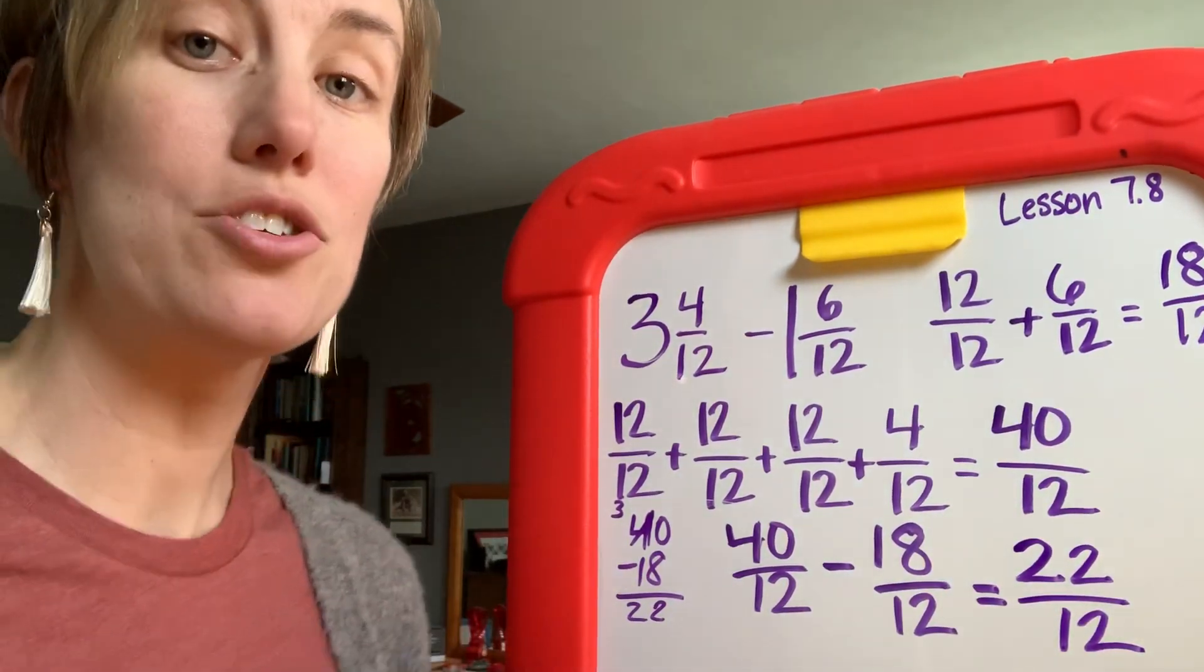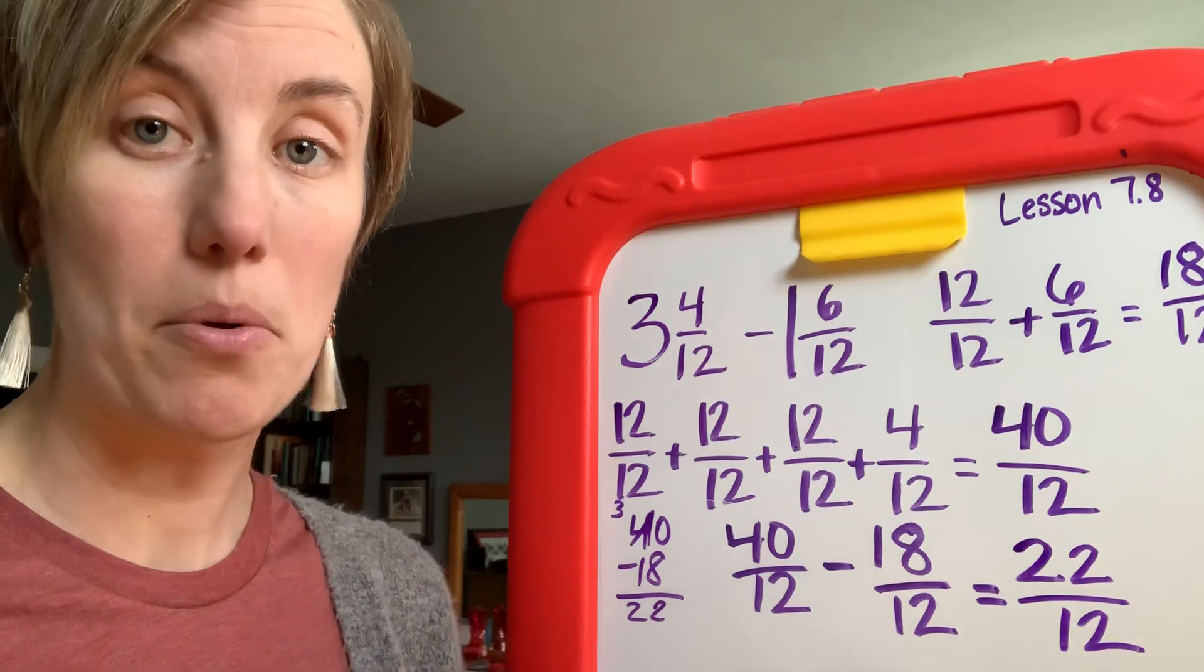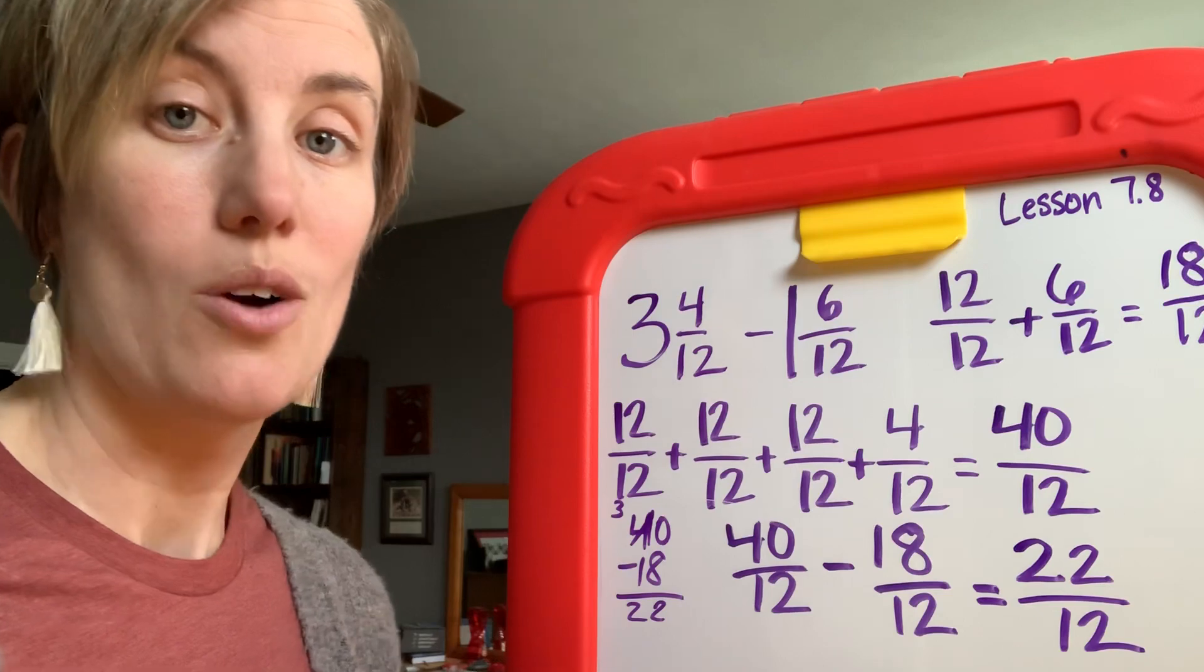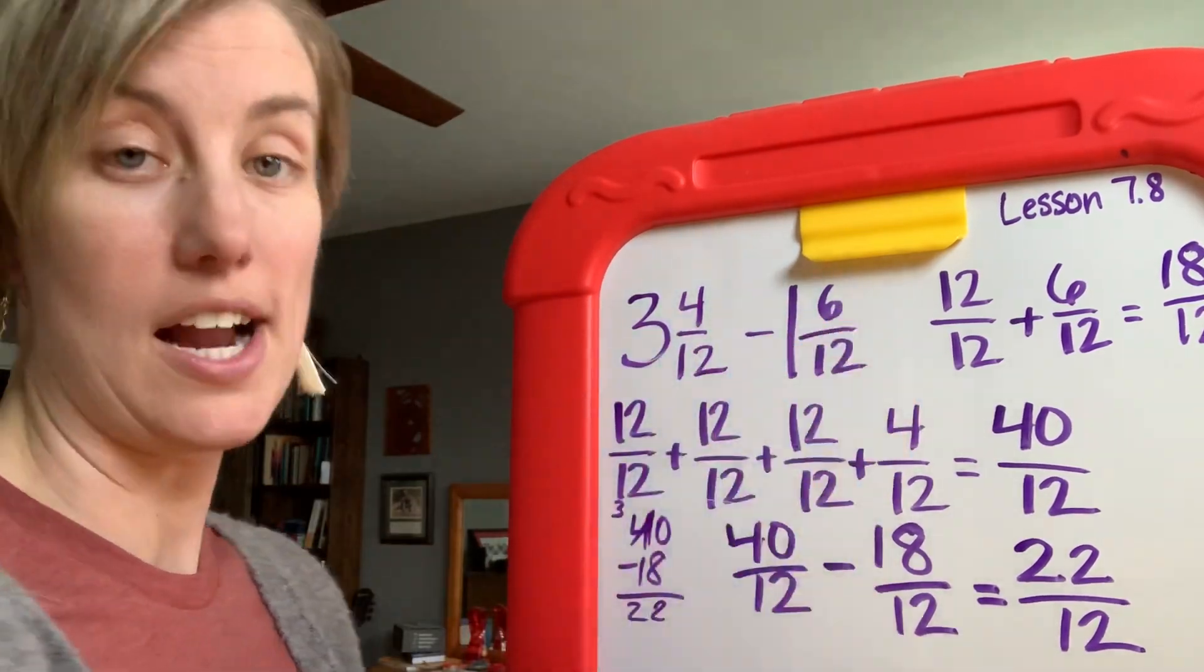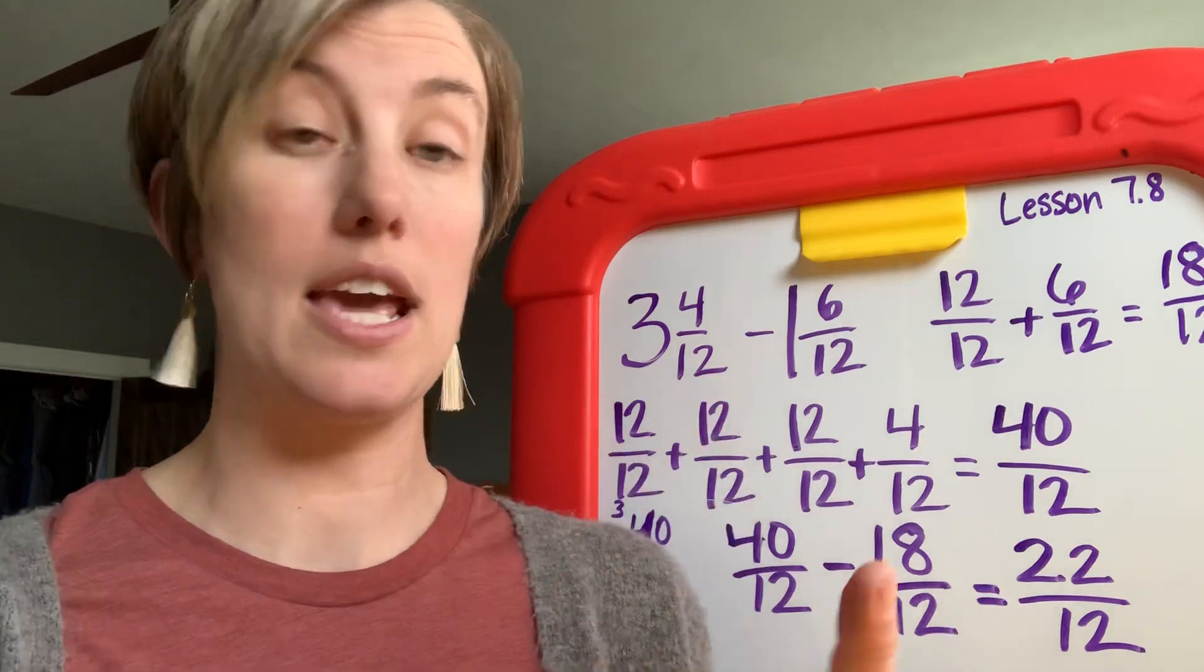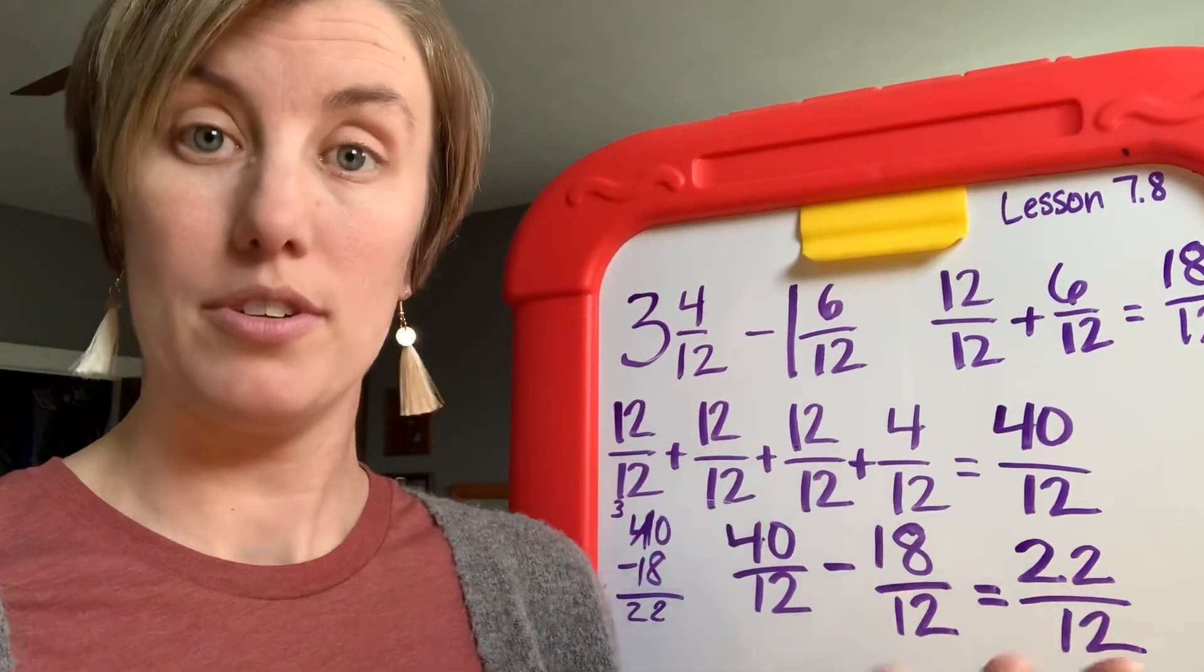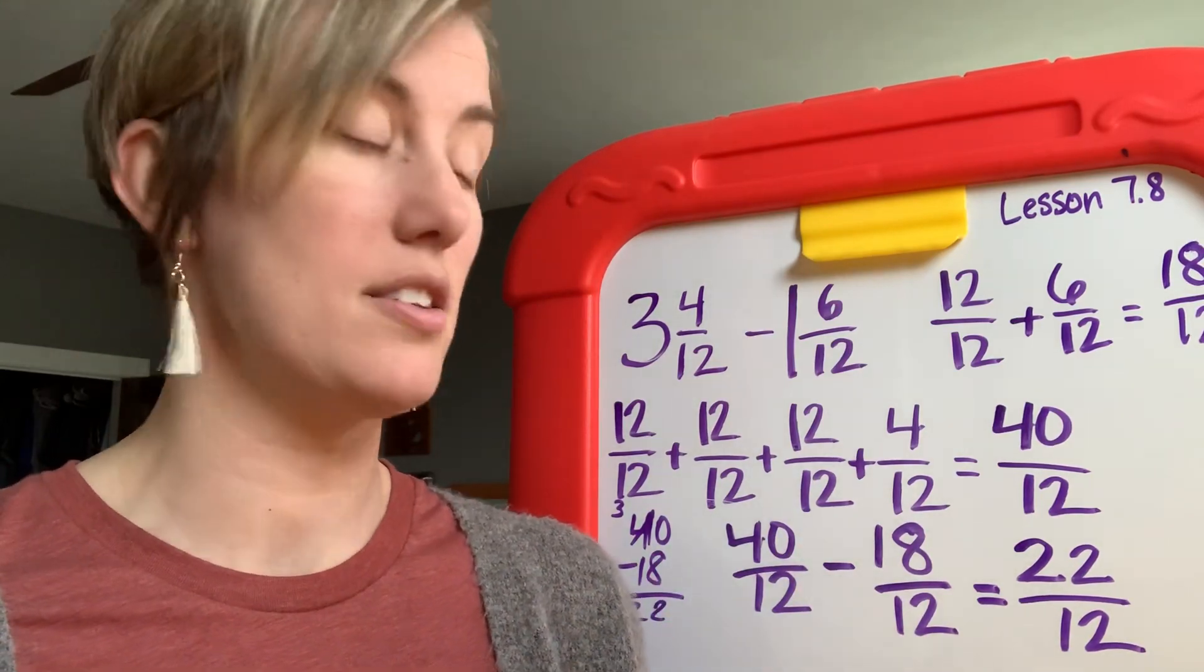These are the three strategies that the GoMath workbook lesson 7.8 gives you in order to subtract mixed numbers where it's really not possible, where you have a fraction that you can't subtract and you have to rename. These are the three strategies you can choose from: you can draw a model, you can rename just the big one, or you can rename both into improper fractions. This is our strategy. You get to choose. You choose which one you want to do.